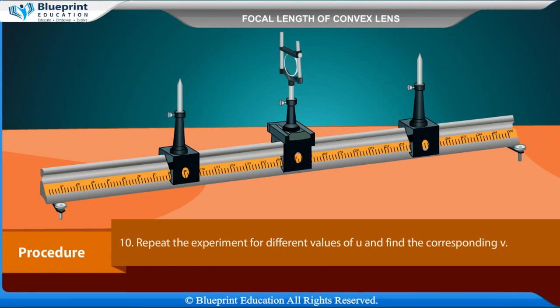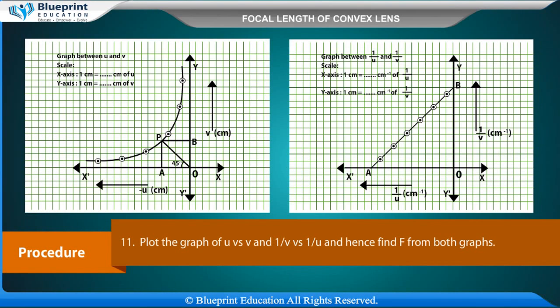Repeat the experiment for different values of U and find the corresponding V. Plot the graph of U versus V and 1/V versus 1/U, and hence find F from both graphs.